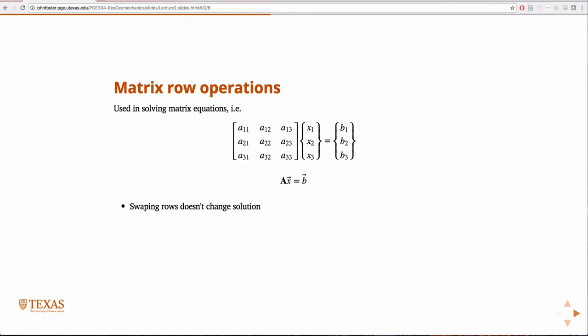So, swapping rows doesn't change the solution. If I had three equations and I wrote them down on the paper, does it matter if you just simply take the third equation and put it in the first in the way you wrote them down on the paper? Of course not. So, that same rule applies here when it's a system of equations. I don't change the solution if I take the third row and put it in the second spot or the second one in the first. So, swapping rows doesn't change the solution.